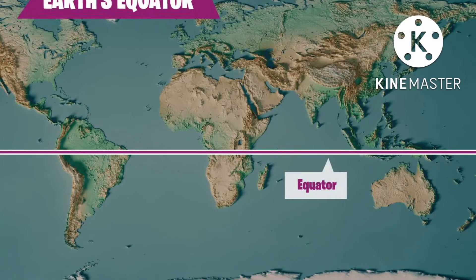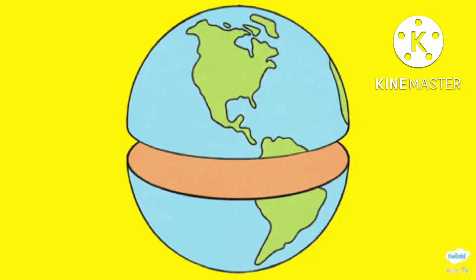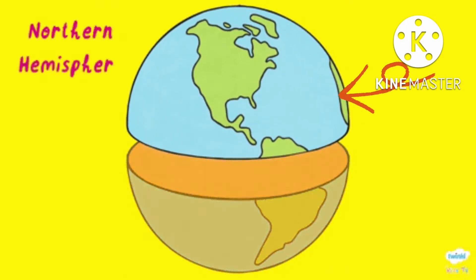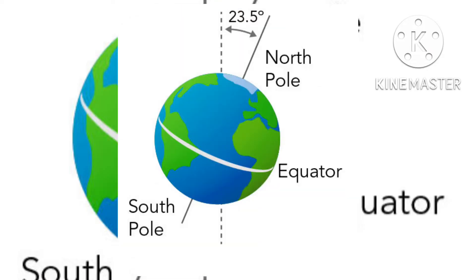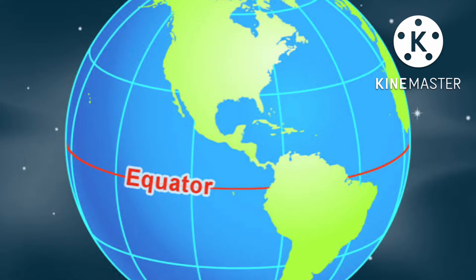The Equator is an imaginary line around the earth that goes exactly midway between the North and the South Pole and divides it into two equal halves: the Northern Hemisphere and Southern Hemisphere. It is also perpendicular to earth's axis, which is another imaginary line made by drawing a straight line from the North Pole to the South Pole. The equator runs through 13 countries.